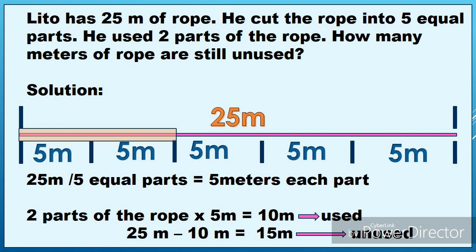He used 2 parts of the roof. Each part is 5, so kung 2 parts ang ginamit niya, 5 plus 5 is 10. 2 parts times 5 meters equals 10 meters — yun yung na-use niya. Pero ang tanong, how many meters of roof are still unused? Kung nagamit na ang 10 meters, ma-minus na lang natin siya sa kabuuan. 25 meters minus 10 meters equals 15 meters.